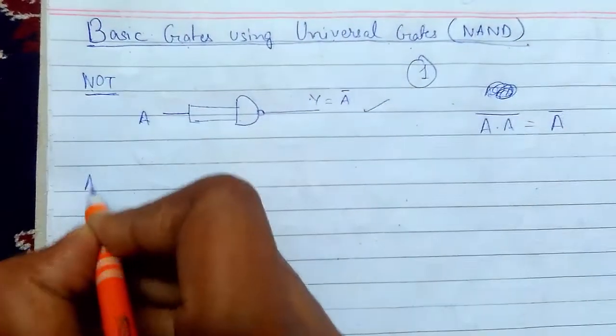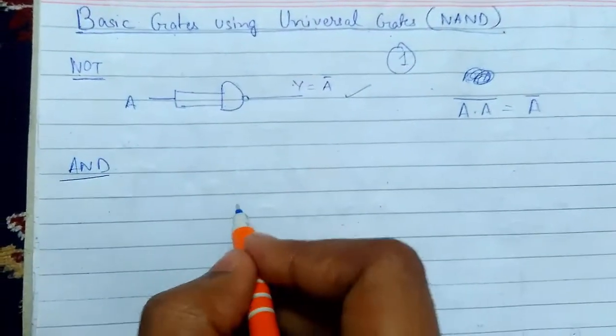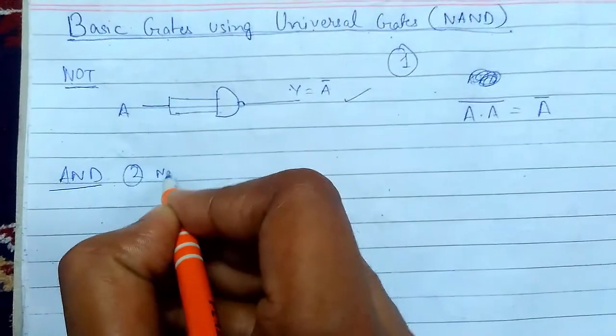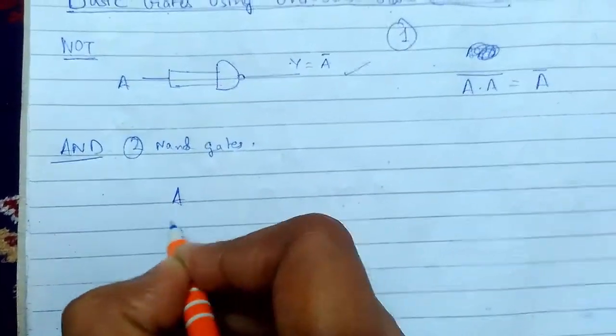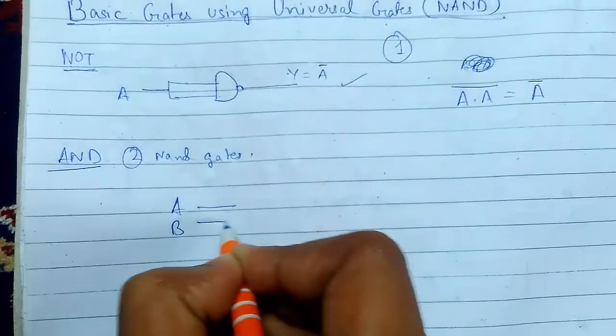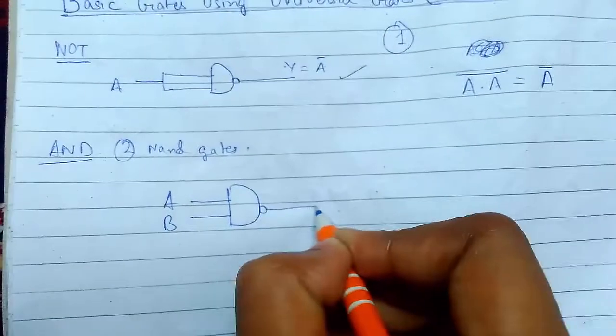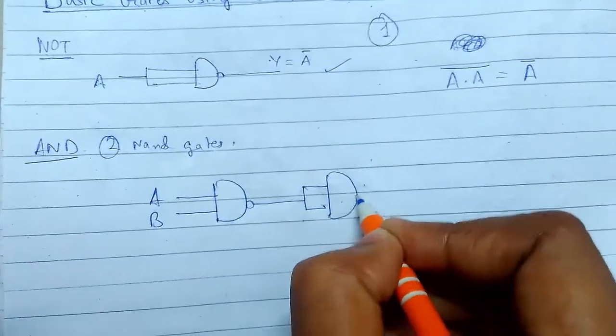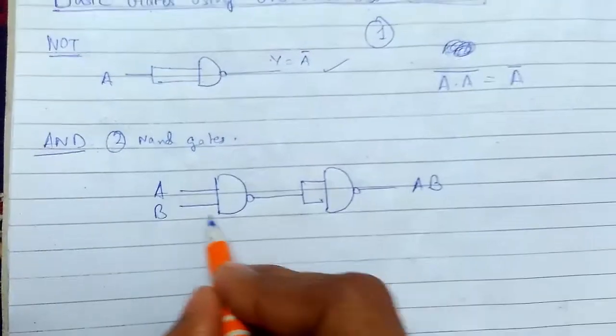Now we will see how to get the AND gate. So for AND gate we need two NAND gates. And this is simple. First of all this NAND gate, and then this. So the result will be this.